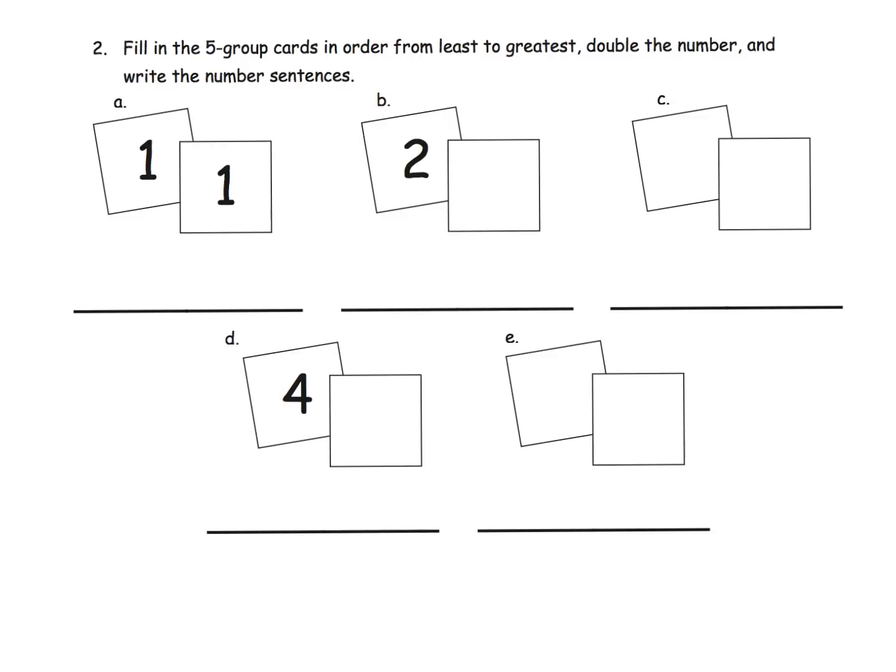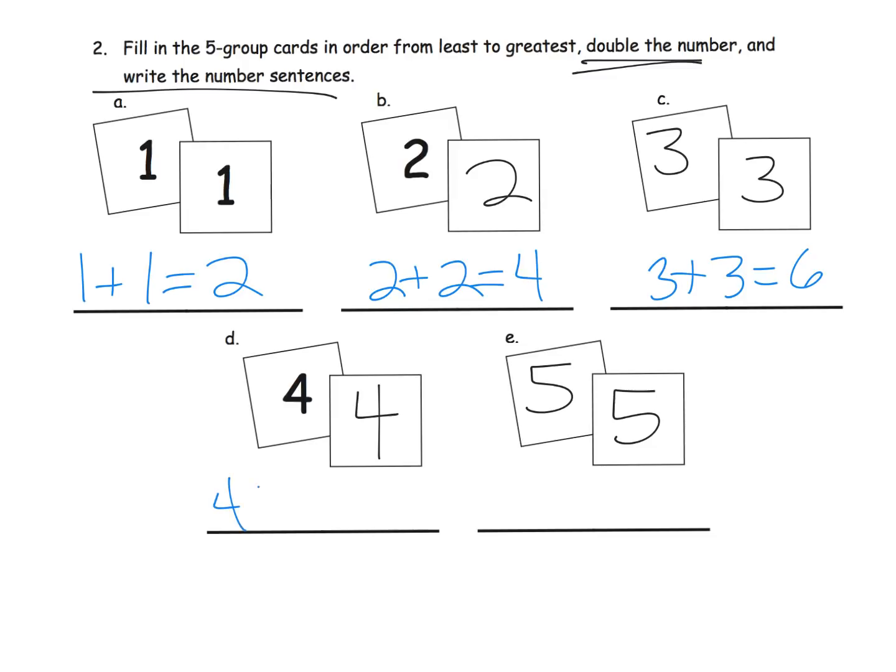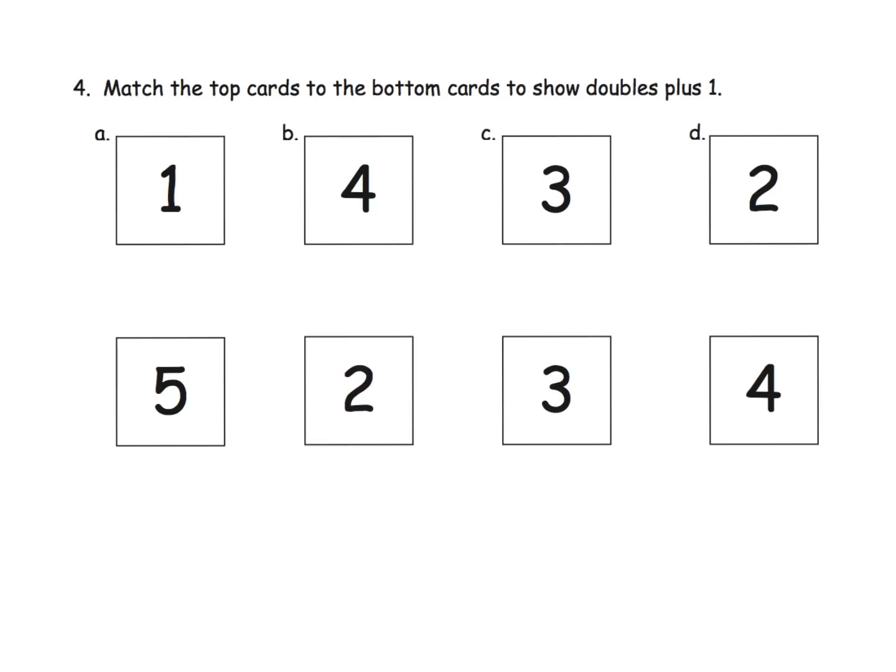Now just to practice, students are being asked to fill in the cards and they want us to use the doubles method. So the idea would be here is one and one, and so here's two and two, three and three, four and four, and five and five. Then they want us to write the number sentence, so it would be one plus one is two, two plus two is four, three plus three is six, four plus four is eight, and five plus five is ten. So the idea is we want students to be practicing their doubles and make that second nature.